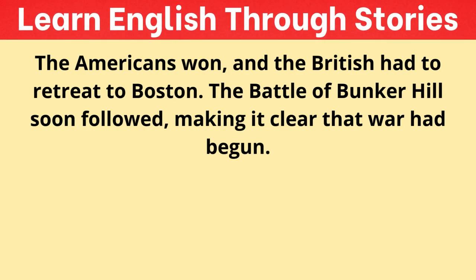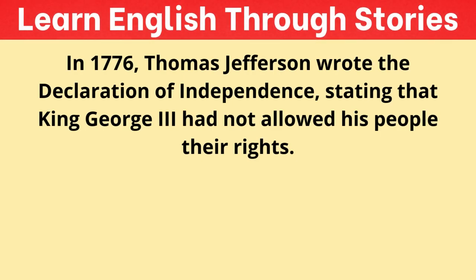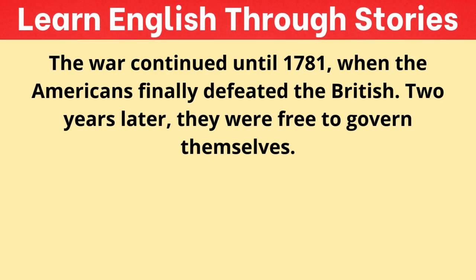George Washington, a wealthy farmer from Virginia, was chosen to lead the American army. He was known for his honesty. In 1776, Thomas Jefferson wrote the Declaration of Independence, stating that King George III had not allowed his people their rights. The Declaration claimed the right to life, freedom, and happiness. The 4th of July became Independence Day, now an important American holiday. The war continued until 1781, when the Americans finally defeated the British. Two years later, they were free to govern themselves. In 1789, George Washington became the first president of the United States. Though he wanted a quiet life, he served until 1797.